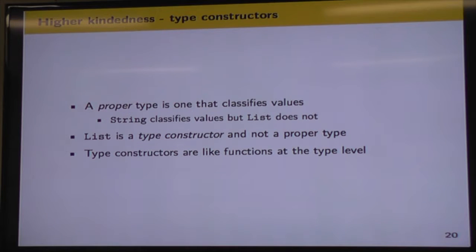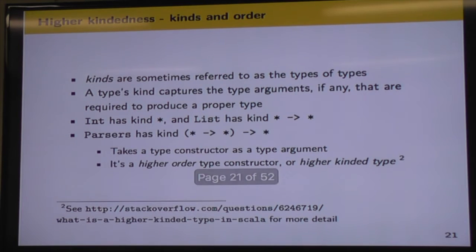So we say that list is a type constructor. So type constructors are like functions at the type level. They take a type argument and then produce a proper type.